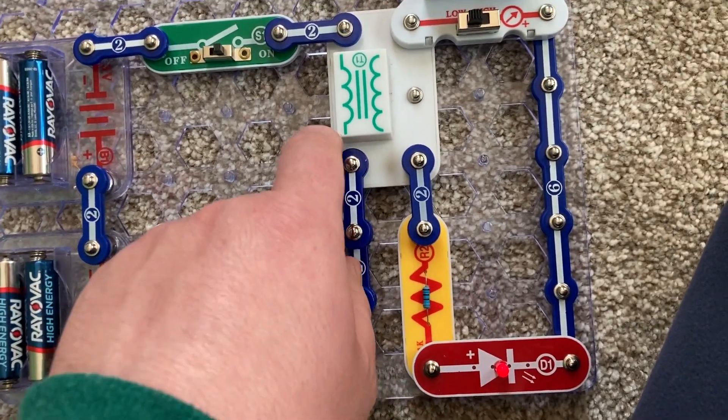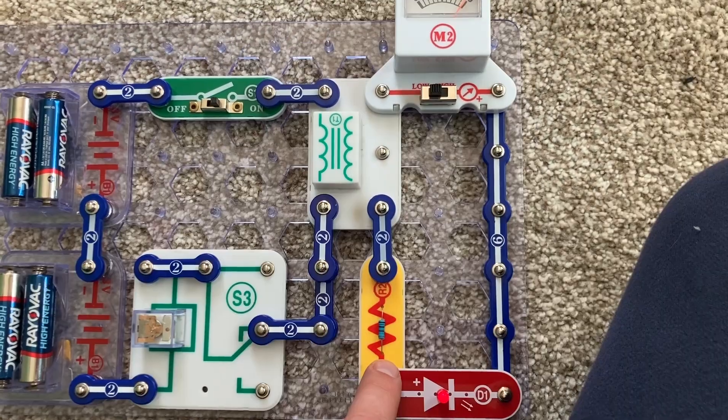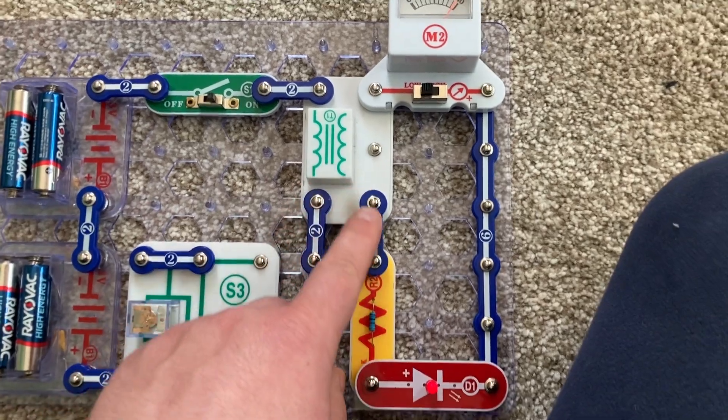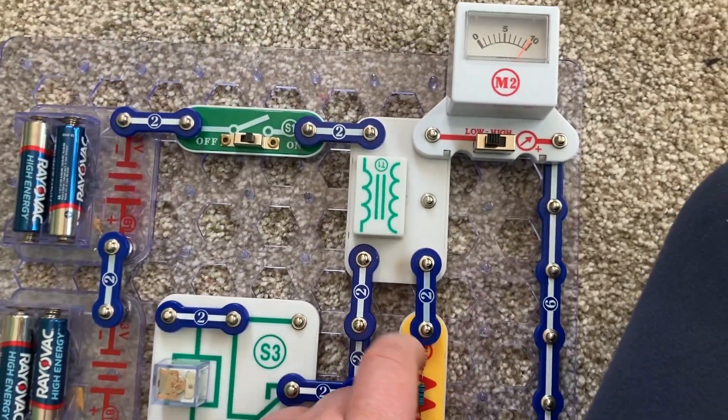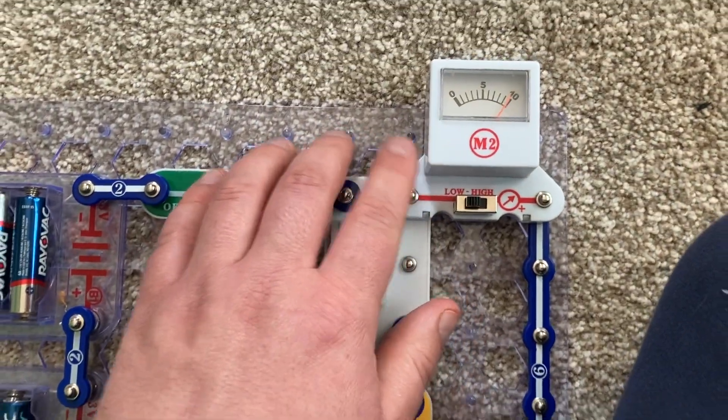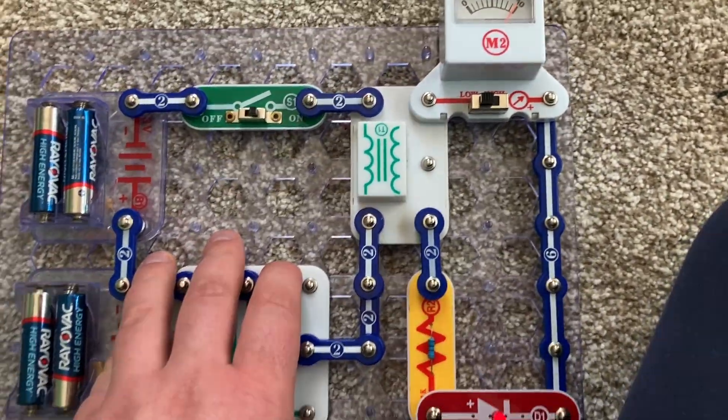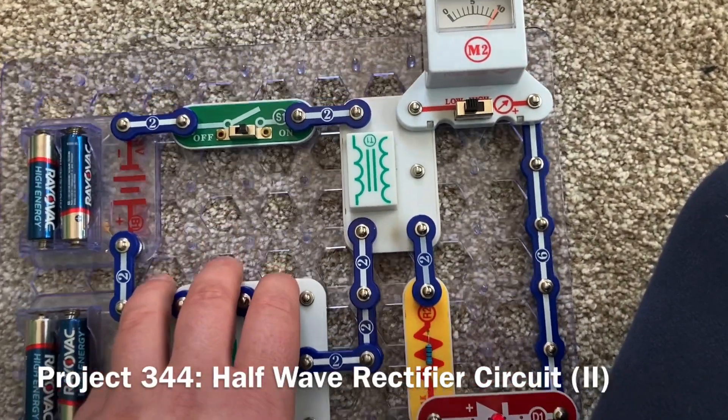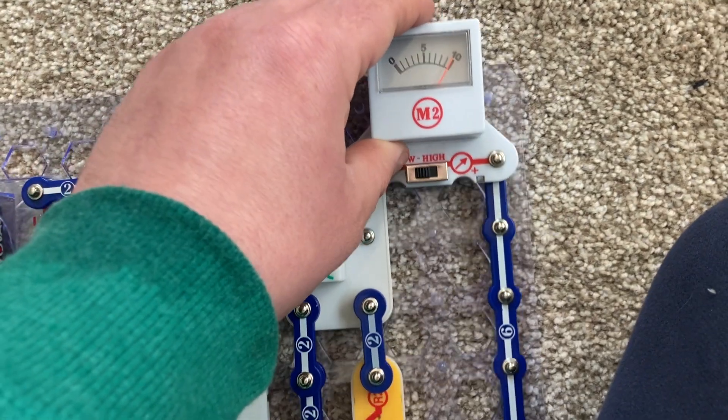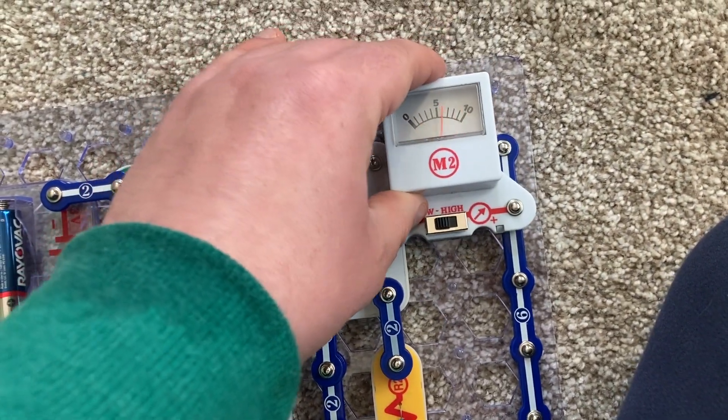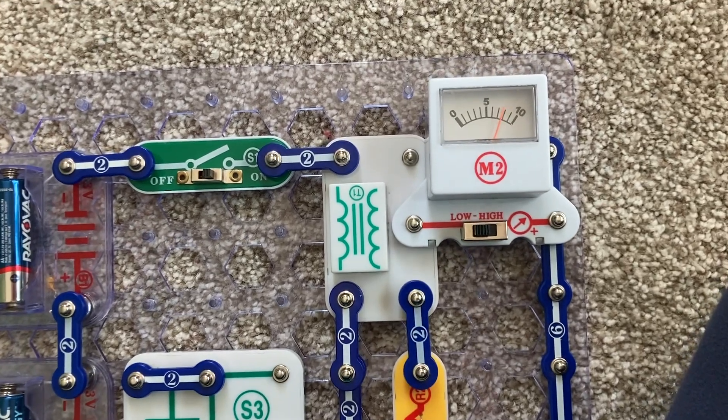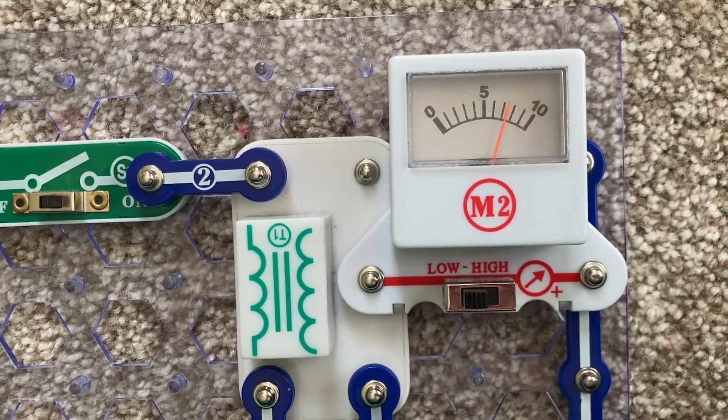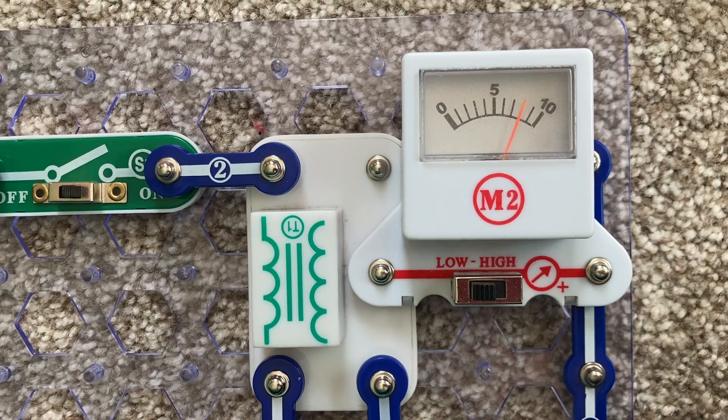Alternating current is flowing from the relay to the transformer, and then DC current is flowing from the transformer to the LED resistor and meter. Now, for the subsequent project, I'm going to move the meter to this position, and the needle deflects west. Only about 7 to 8 milliamps.